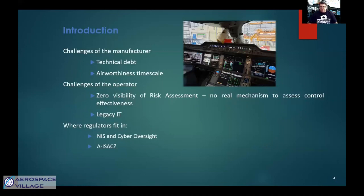Any introduction of a new system that could impact operations is risk-managed to the nth degree, with a lot of risk avoidance in place. Either that, or you throw resources at it to make sure that if something goes wrong when you introduce a new system, the impacts are mitigated as much as possible. What it does mean is that over time, airlines can become quite flat in their networks. And if the perimeter is breached, it's very easy for an attacker to pivot inside the networks.